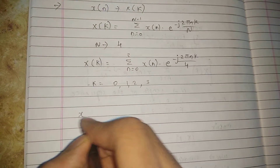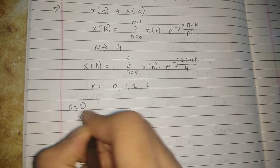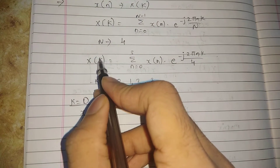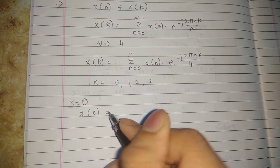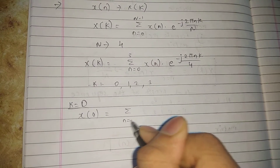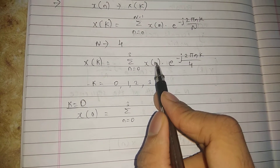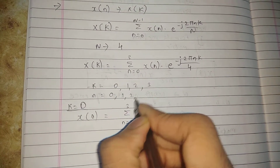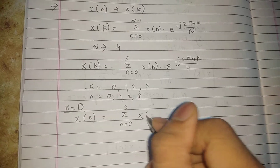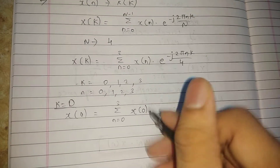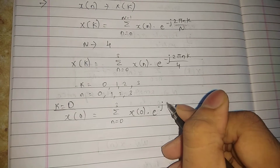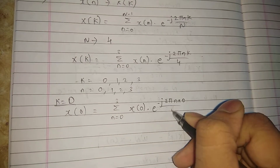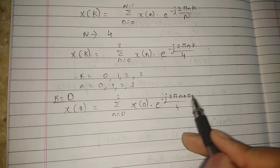For k equals 0, I will calculate by substituting 0 in place of k. So X of 0 equals summation of n equals 0 to 3 of X of n. With n also ranging from 0, 1, 2, 3, I will write X of 0 multiplied by e raised to minus j 2 pi n into 0 upon 4, where k is 0.